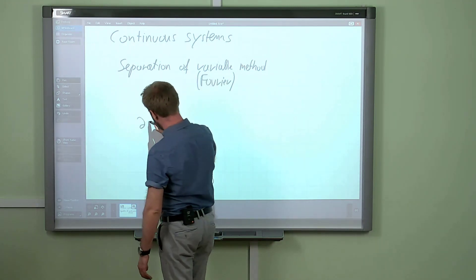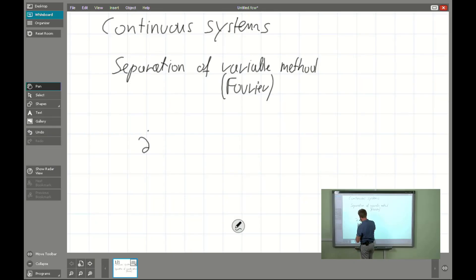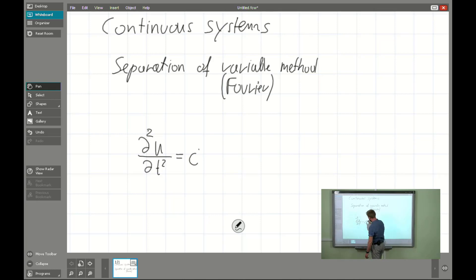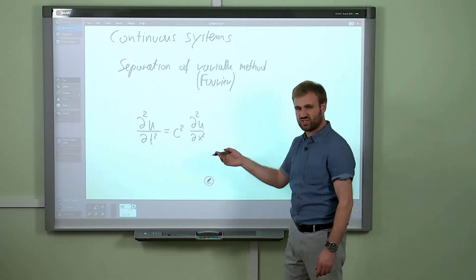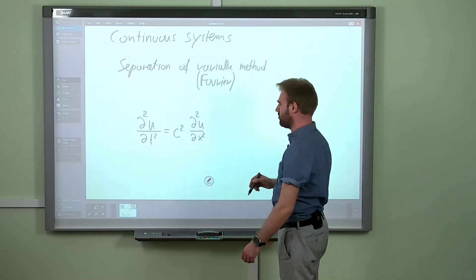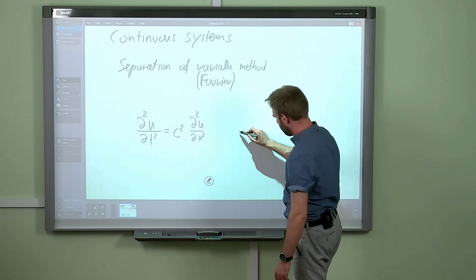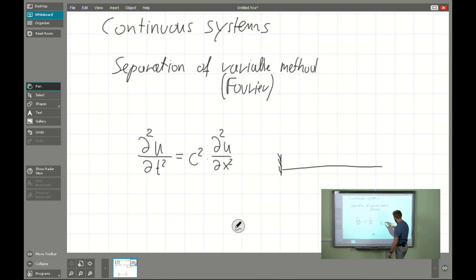We will be dealing with the linear partial differential equation. For example, it will be d²u/dt² equals c² times d²u/dx². We know that this is an equation which describes the dynamics of the continuous rod or the continuous string. In our case it will be, for example, the following system.